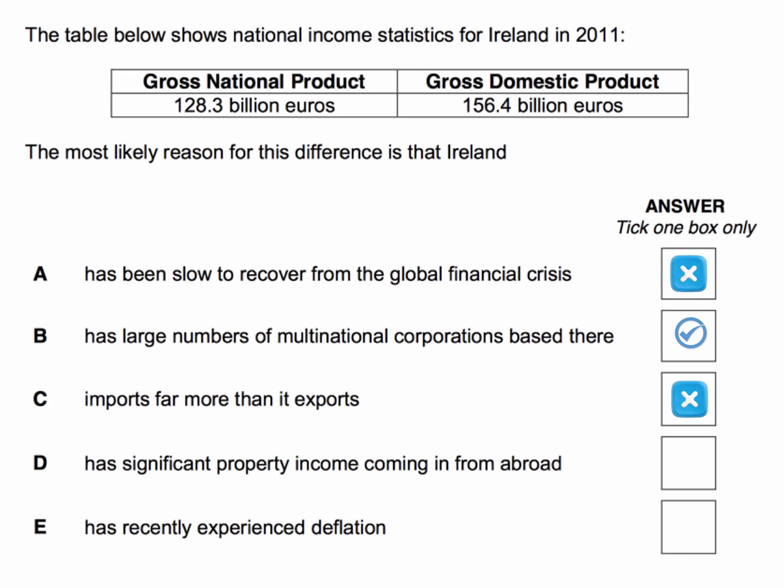C is wrong — we can't tell whether Ireland imports far more than it exports, as we haven't been given any export and import data at all. D is the reverse of B: if Ireland had significant property income coming in from abroad, then their GNP would be higher than their GDP. But of course, we're told it's the reverse. And E is wrong — we can't make any inference about what's happened to the real level of gross domestic product or GNP in Ireland, because we're not given any data on inflation.